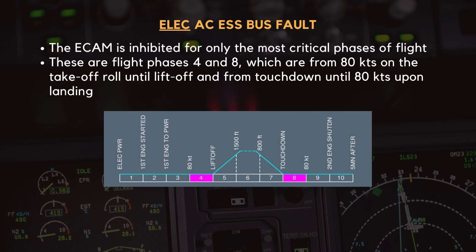The eCAM is inhibited for only the most critical phases of flight — these are flight phases 4 and 8, which are from 80 knots on the takeoff roll until liftoff, and from touchdown until 80 knots upon landing.